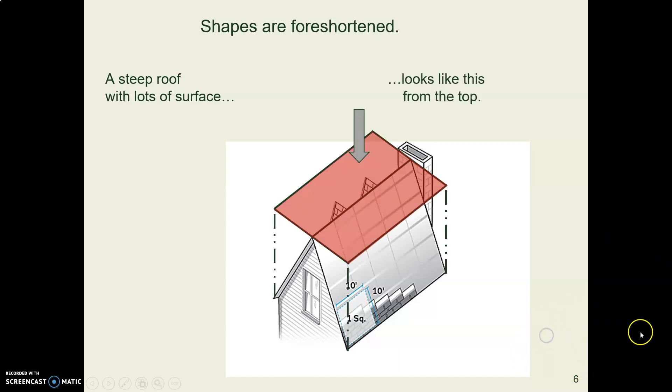But when we look down from above it looks like this. So notice the difference, the big old slopey stuff that we put roofing material on, compared with the foreshortened rectangle that we see when we look down from above.